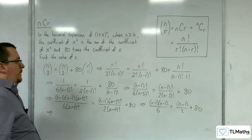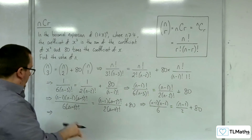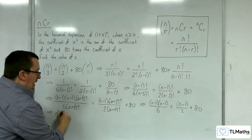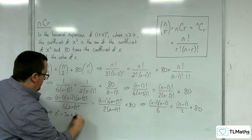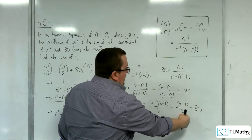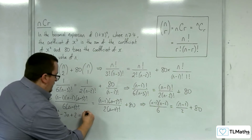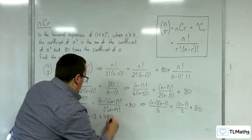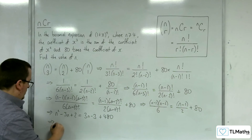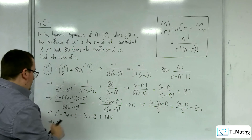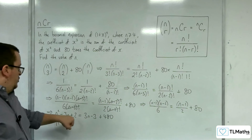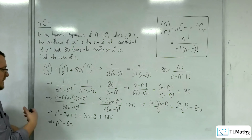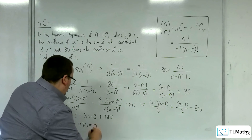Now I'm going to multiply through by 6 and expand everything out in one go. So n squared minus 3n plus 2 equals 3 lots of (n-1), so 3n minus 3, and 80 multiplied by 6, so 480. Subtracting 3n from both sides gives 2; adding 3 to both sides gives 5; subtracting 480 from both sides gives minus 475 equals 0.